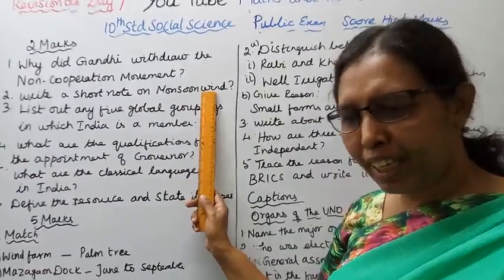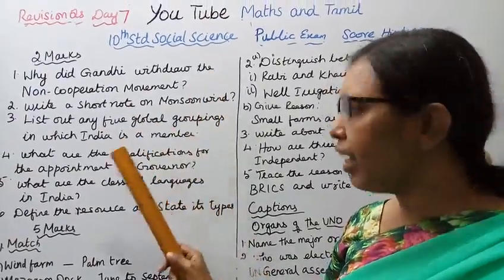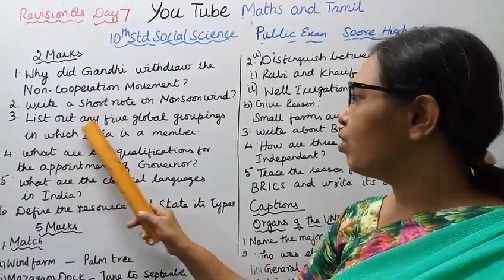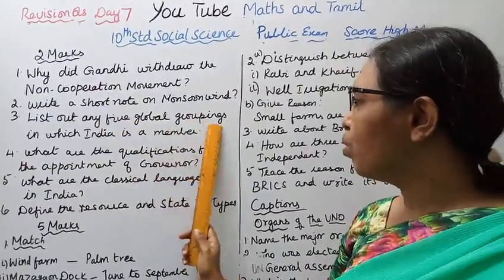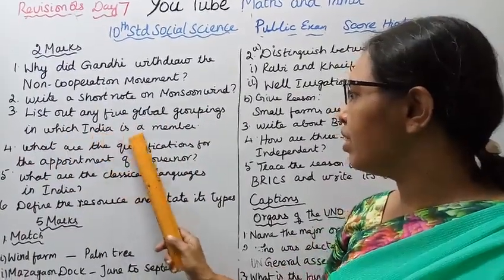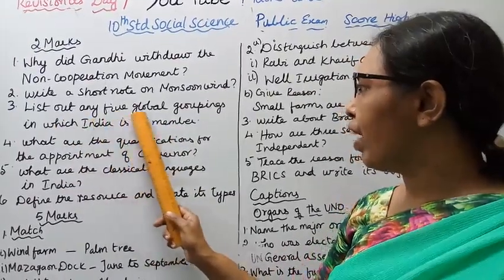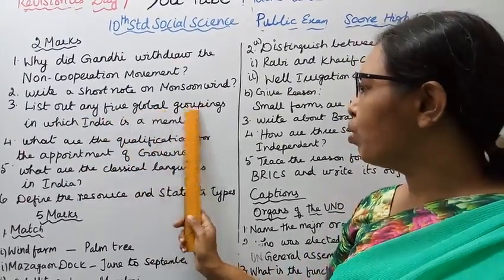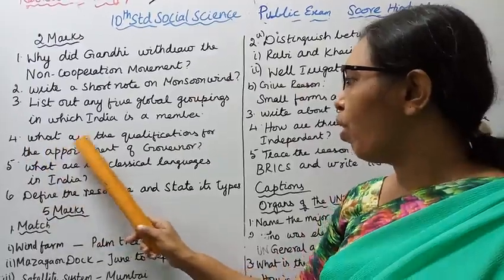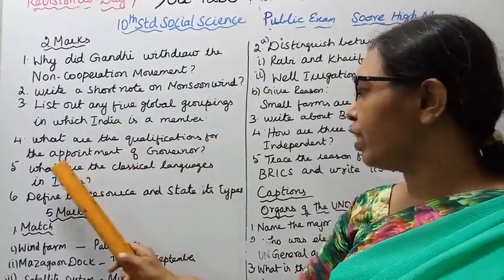Third: List out any 5 global groupings in which India is a member. Fourth: What are the qualifications for the appointment of Governor?